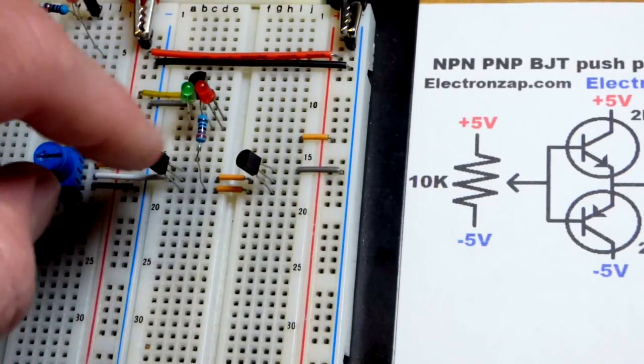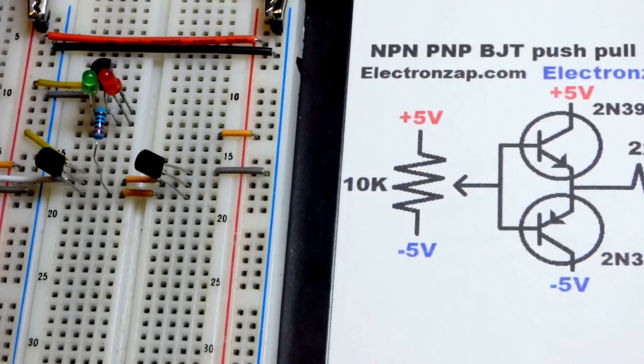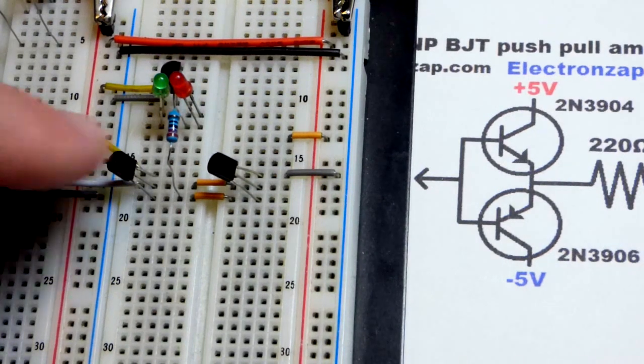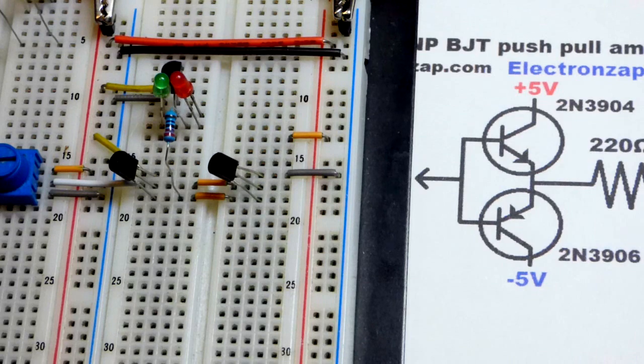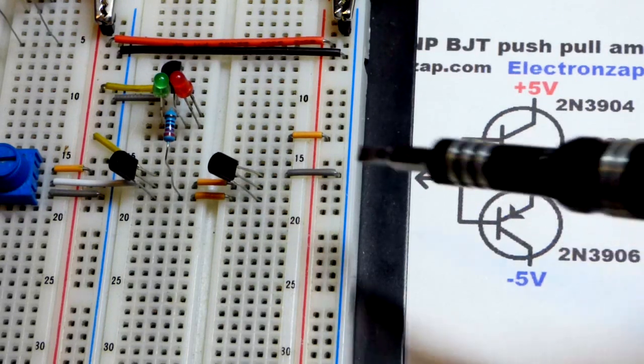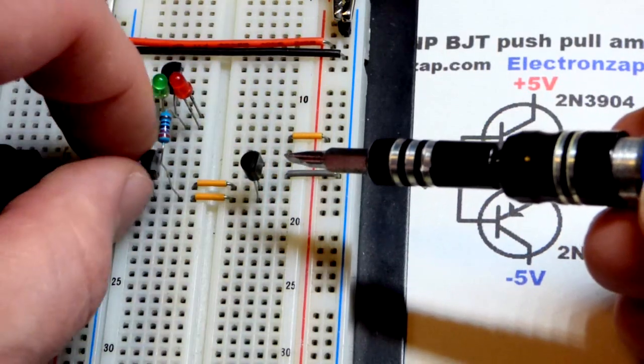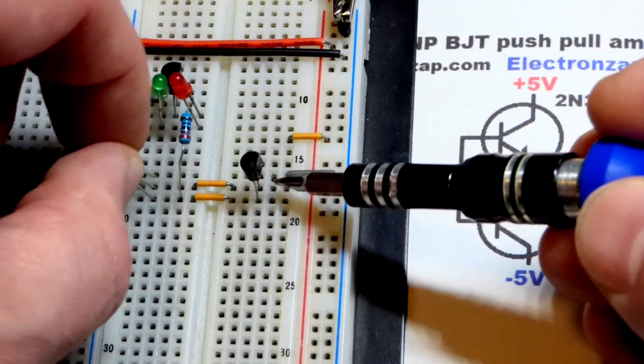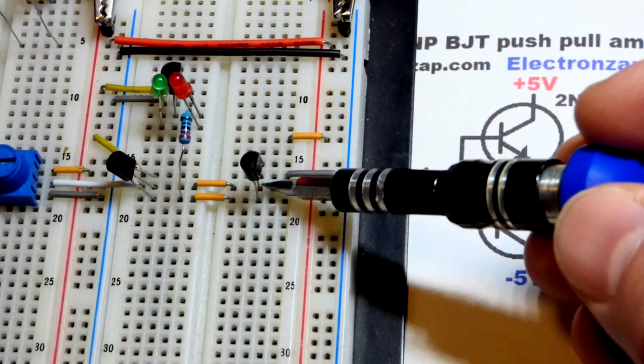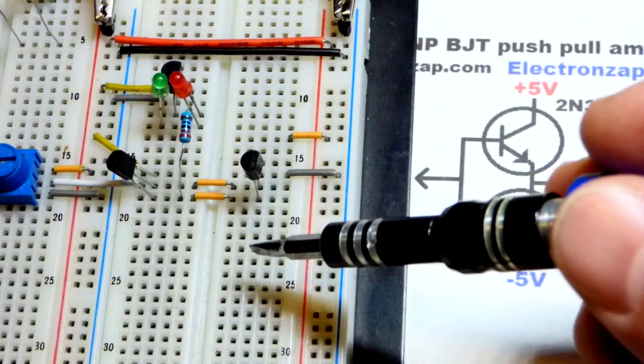The wiper to the trim pot is going to the middle pin, the base of both the PNP and the NPN bipolar junction transistor. So here's the 2N3904 the NPN type, the 2N3906. They both have the same pin layout even though their chemistry is opposite. On the top is the collector, flat side is facing right by the way, so top is the collector, middle is the base, bottom is the emitter. I got a little jumper going to the base of that one and then the white jumper going to the trim pot wiper.